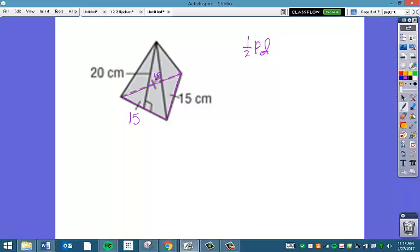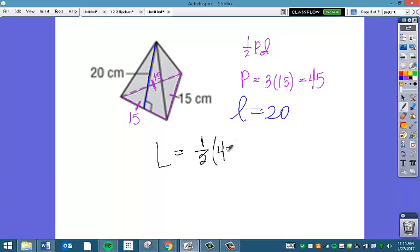The formula for lateral surface area of a pyramid is one-half times the perimeter of the base times the slant height. You'll notice there's three tick marks, this is an equilateral triangle. So the perimeter of our base is going to be 3 times 15, which is 45. And then our slant height is right here, 20.